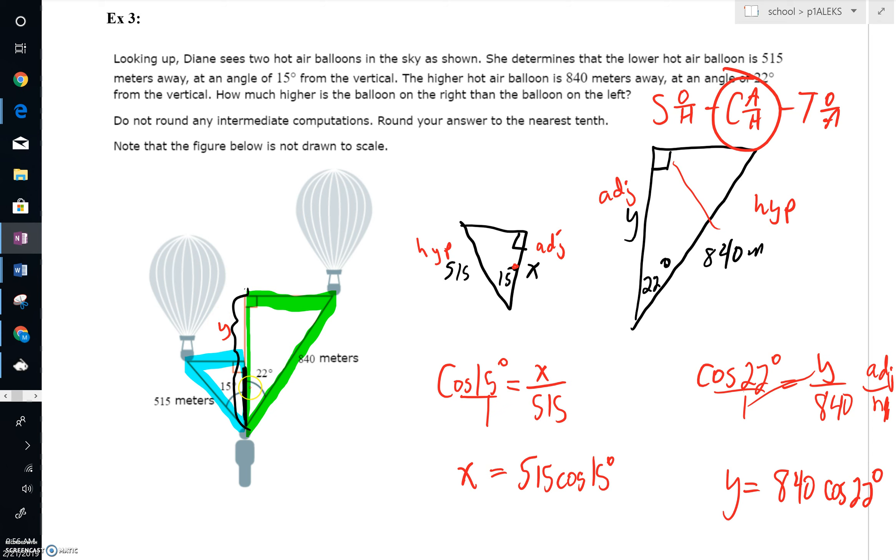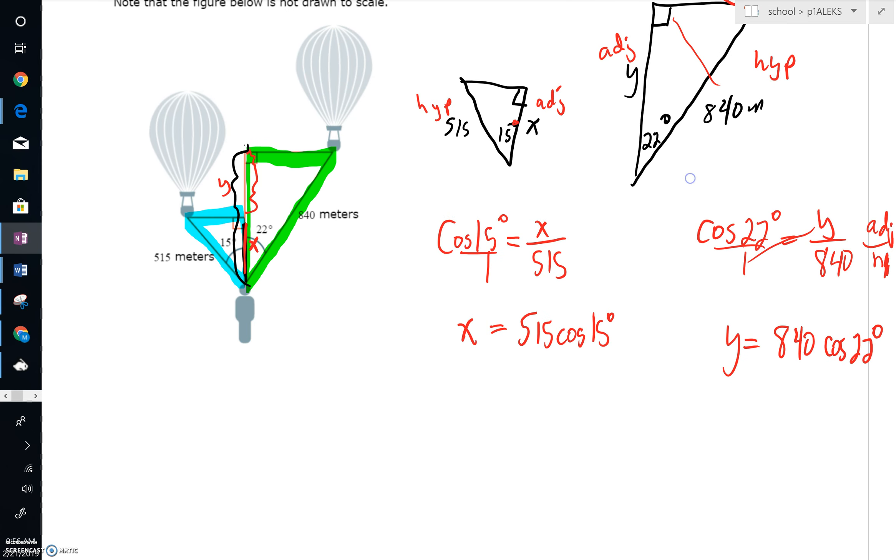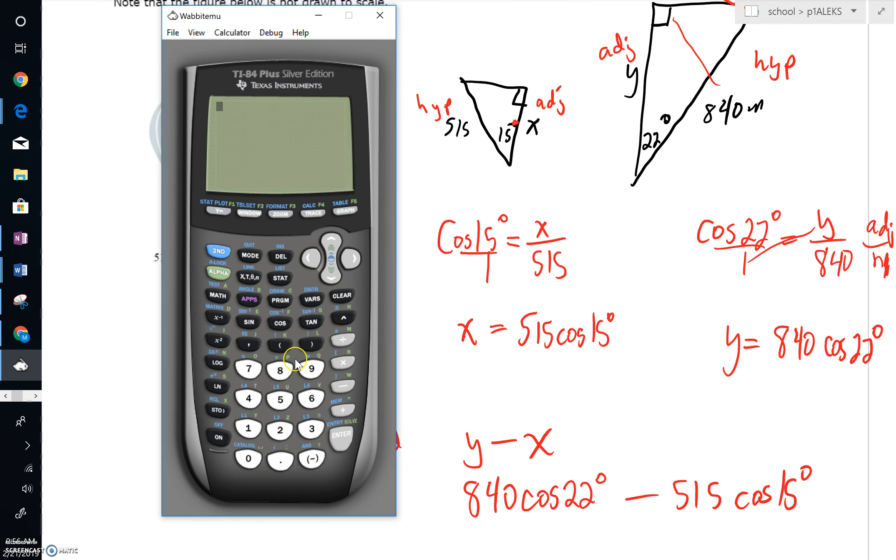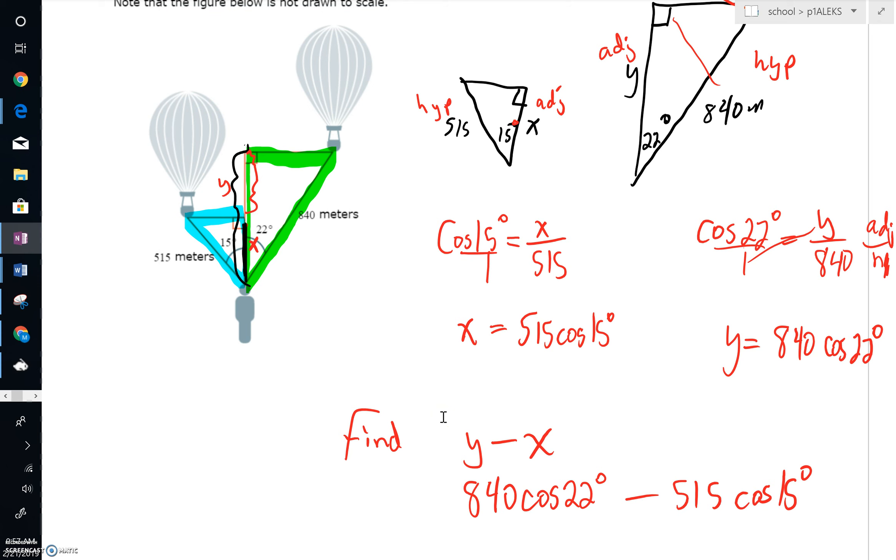But look, if I've got Y right here and if I've got X right there, how much higher are they? That is that one on the right. That's the difference in their heights. What we need to do is find Y minus X. So we'll have 840 cosine of 22 degrees minus 515 cosine of 15 degrees. And we'll just get that thing typed out. So it's 840 cosine of 22 minus 515 cosine of 15 degrees. Again, going to the nearest decimal, that's 281.4. So it's 281.4 meters. That's how much taller the higher balloon is.